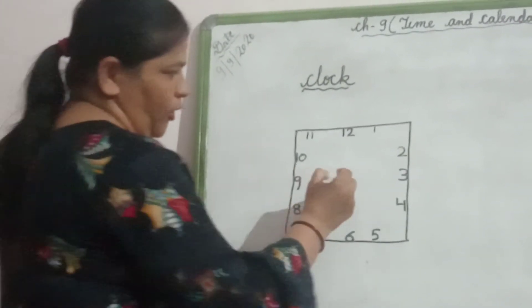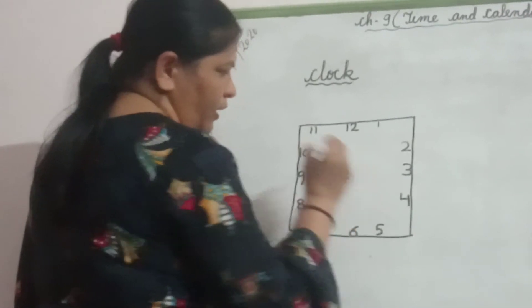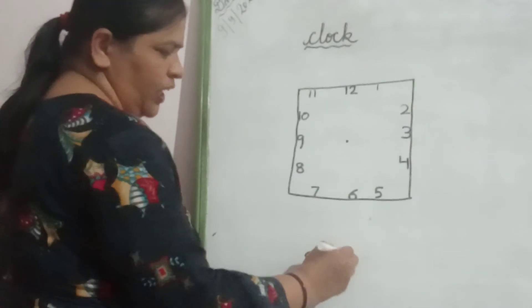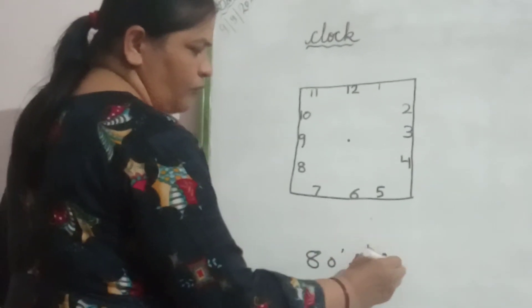Now, you have to take one midpoint. Here, I have taken one midpoint. Now, suppose the time is 8 o'clock. Okay? Now, what do you have to make? You have to make hands.